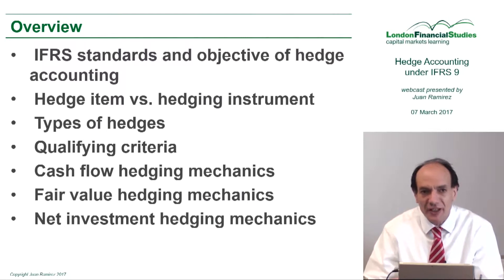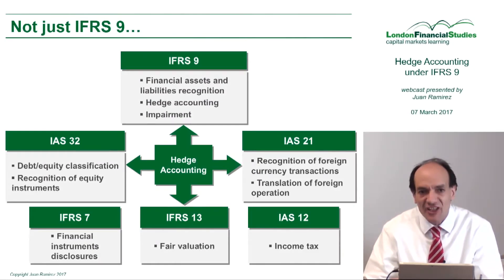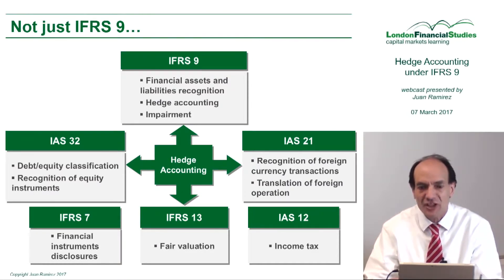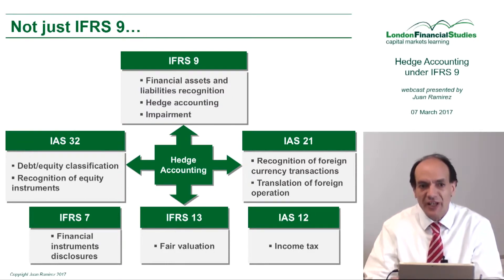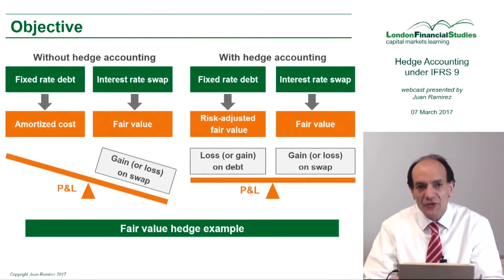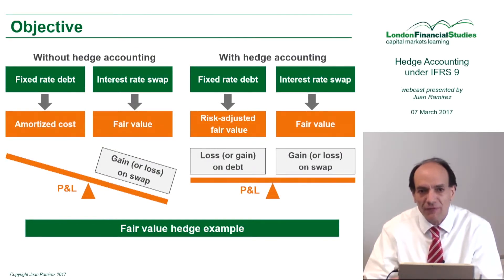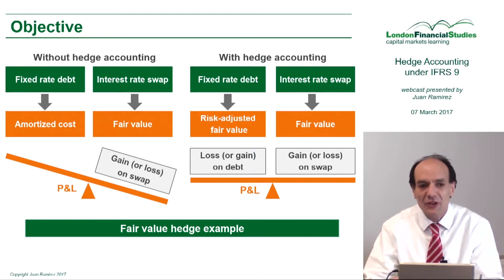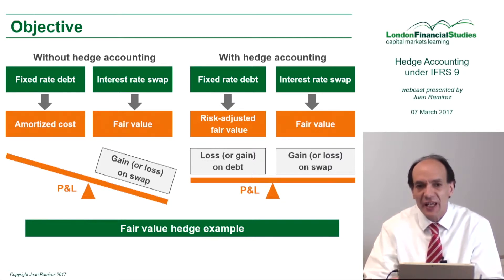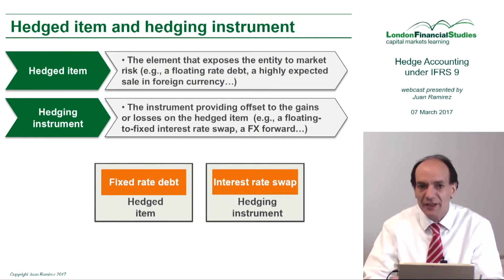When we talk about Hedge Accounting, the main accounting standard is IFRS 9 Financial Instruments. This standard sets the guidance regarding how financial assets are treated. The main objective of Hedge Accounting is to avoid or mitigate any P&L volatility.